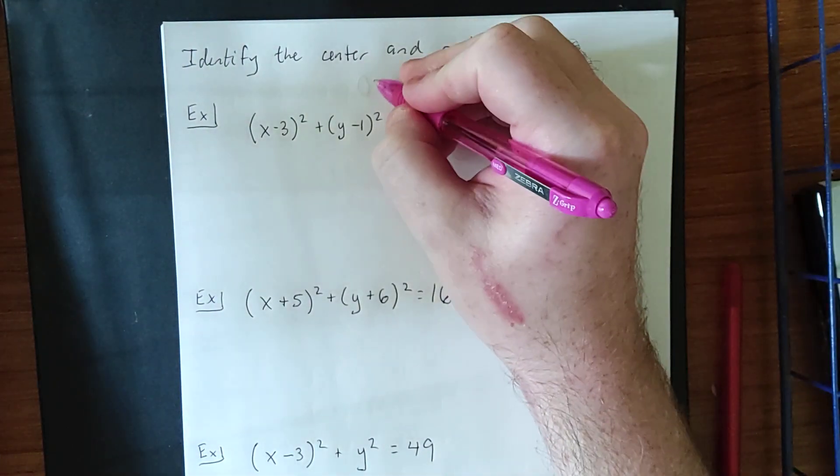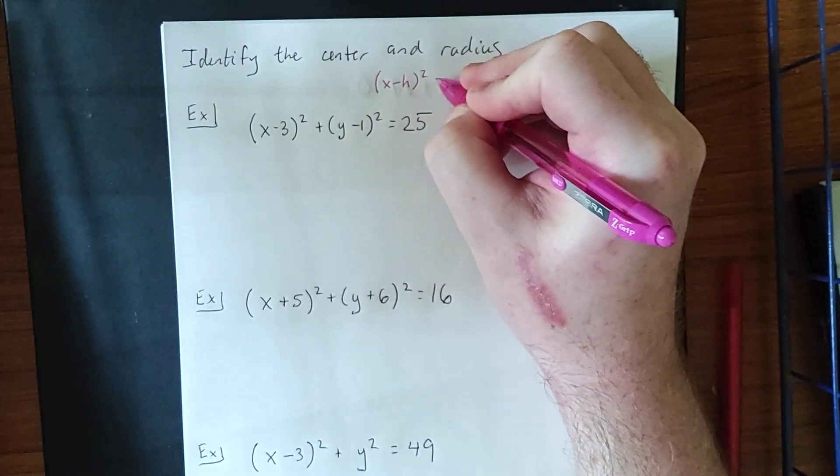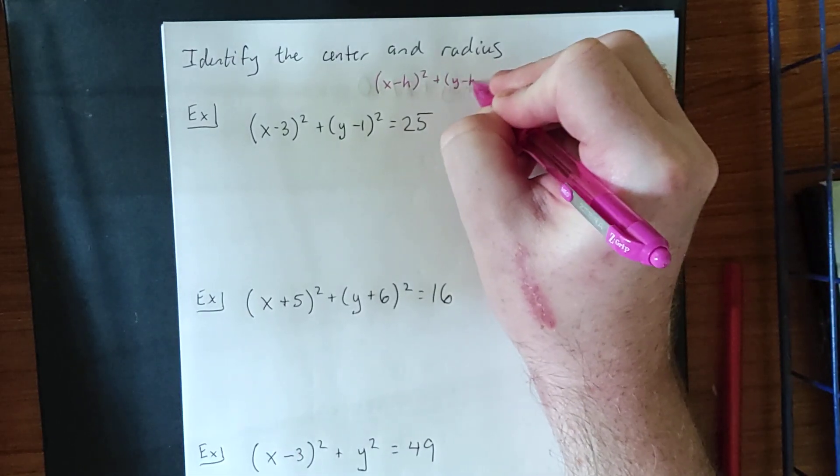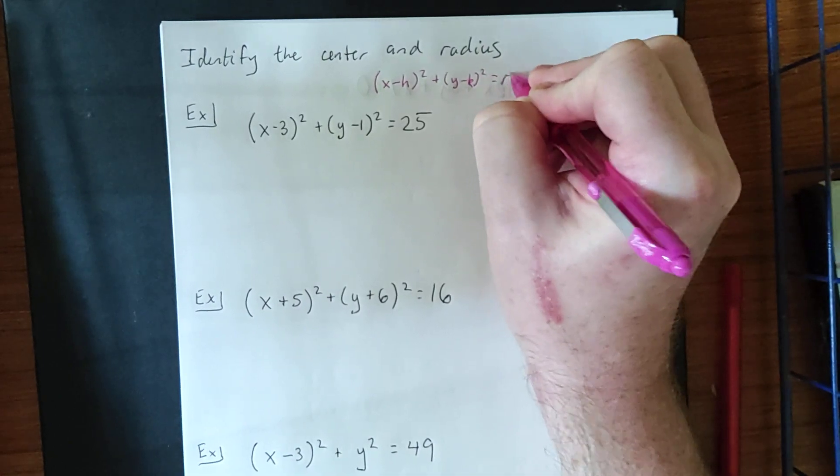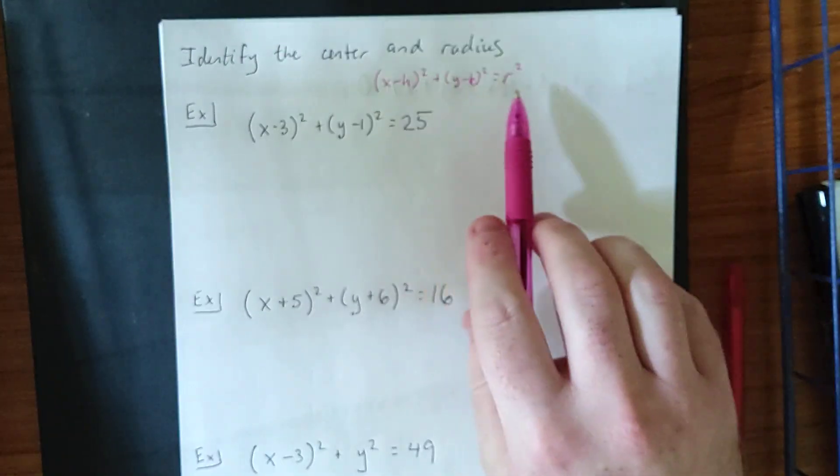Now, keep in mind from our previous video, we said that we'll be looking for things that are of the form x minus h quantity squared plus y minus k quantity squared is equal to r squared. With that in mind, our center is actually h,k and our radius is r.